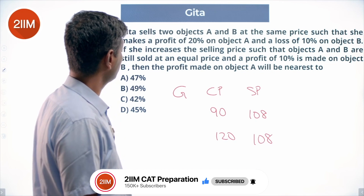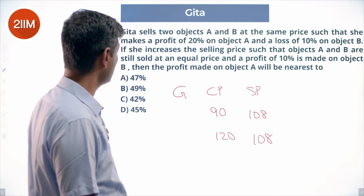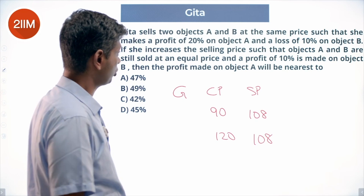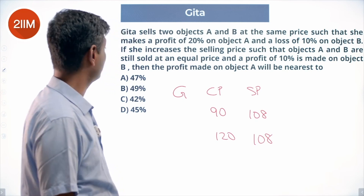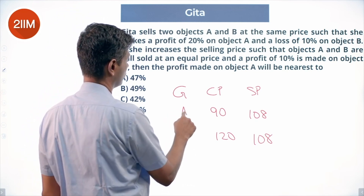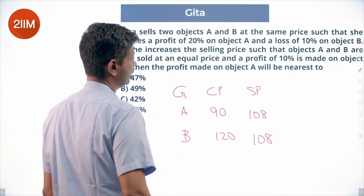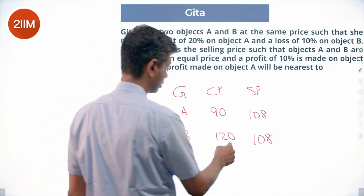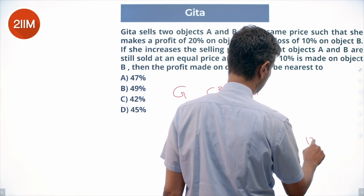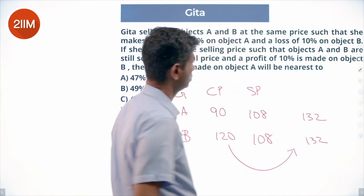If she increases the selling price such that objects A and B are still sold at an equal price and a profit of 10% is made on object B, then B is sold at 132. Since they must be sold at the same price, object A should also be sold at 132.